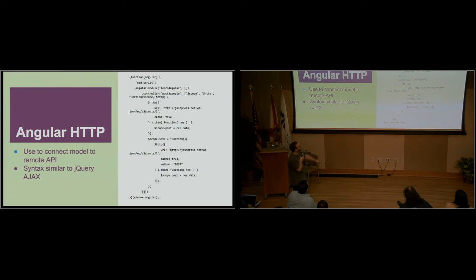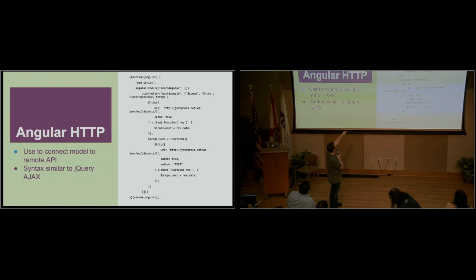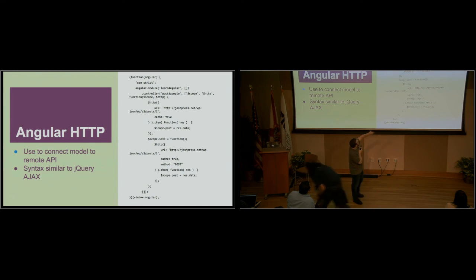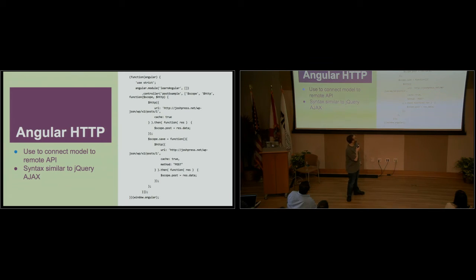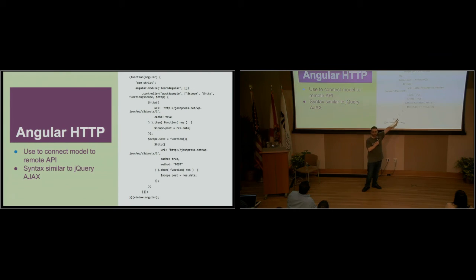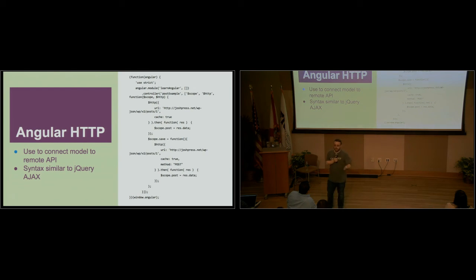This is an example where we've added a save callback. We can call scope.save — get the data and put it into post, and then down here I have a function called 'save.' What's it going to do? It's going to make a request to the same endpoint, but with method POST — just like in jQuery, it defaults to GET requests, and we can change it to POST, DELETE, or OPTIONS.